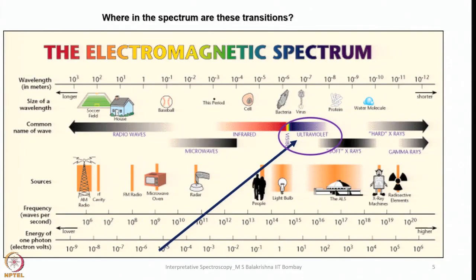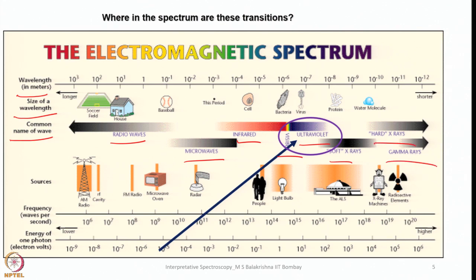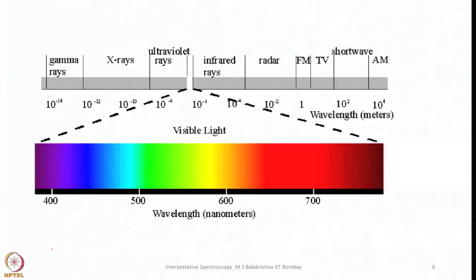Here I have shown the electromagnetic spectrum with a lot of information: the wavelength in meters is given, the size of wavelength from left to right, and the common names of waves — for example, radio waves, microwaves, infrared, visible, ultraviolet, soft X-rays, hard X-rays, and gamma rays. The sources of the corresponding frequencies and frequency in waves per second are also shown, as well as the energy of one photon in electron volts. It is a very useful slide. Our attention should be towards the UV-visible region in the electromagnetic spectrum, which is the range we are going to focus on in our discussion.